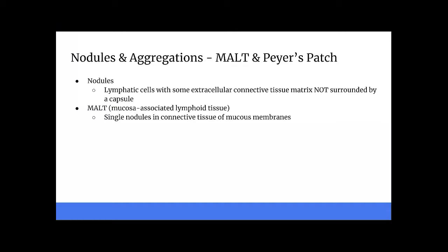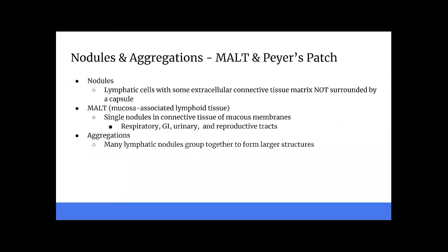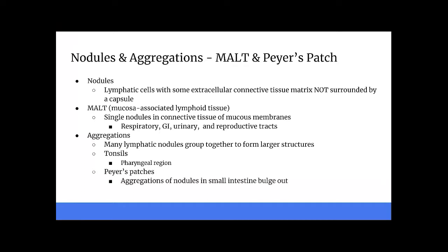Although many lymphatic nodules are small and solitary, some occur in multiple large aggregations in specific parts of the body. Some aggregations you may be familiar with are tonsils, found in the pharyngeal region, and Peyer's patches — also called aggregated lymphatic follicles — which are located in the ileum of the small intestine.